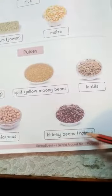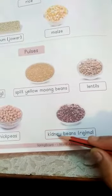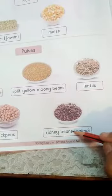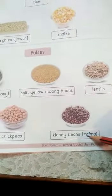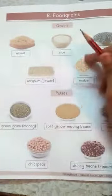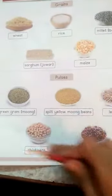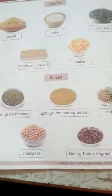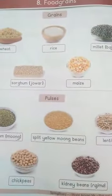This is kidney beans. Rajma. K-I-D-N-E-Y, kidney, B-E-A-N-S, beans. Kidney beans, rajma. So, these all called grains and these all called pulses. And this two children, good.